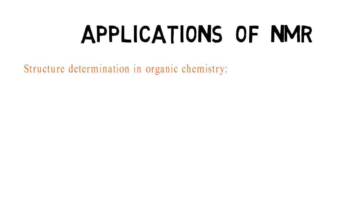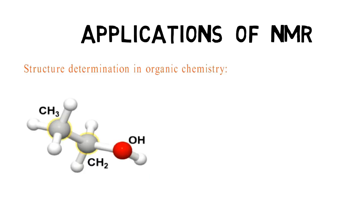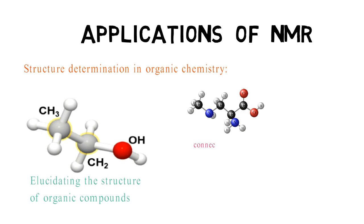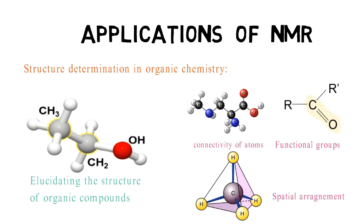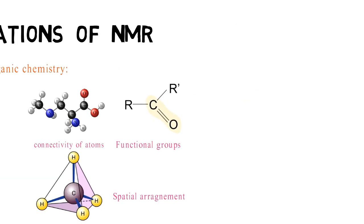NMR spectroscopy is extensively used for elucidating the structure of organic compounds. It provides detailed information about the connectivity of atoms, functional groups, and spatial arrangements within molecules.